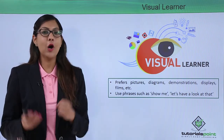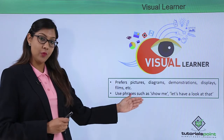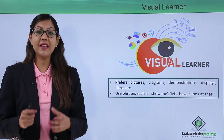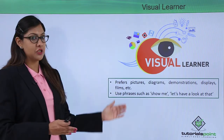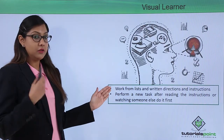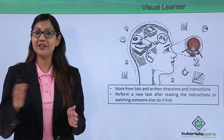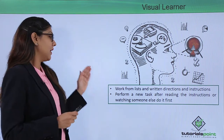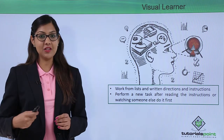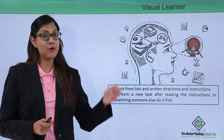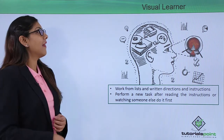Whether it is pie charts, graphs, or any kind of film, anything visual helps them learn better. They use phrases such as 'show me' or 'let's have a look at that,' which helps a teacher identify that a student is a visual learner. Visual learners work from lists and written directions. If you give them a map, they are likely to find directions better. They perform a new task after reading the instructions or watching someone else do it first.